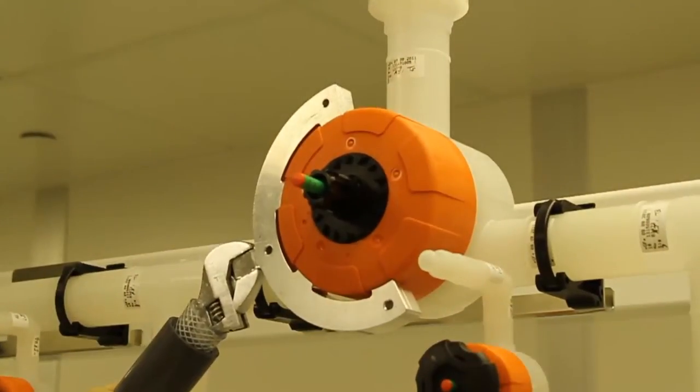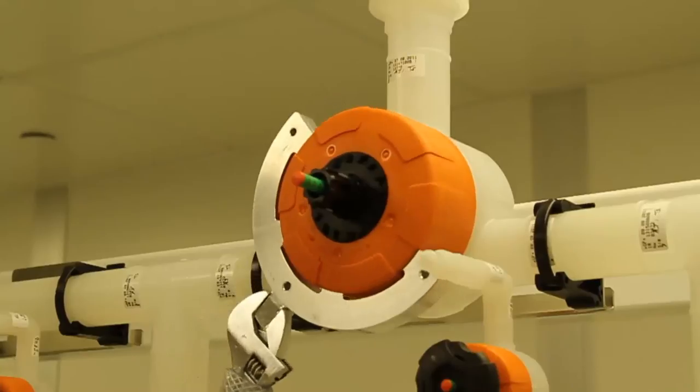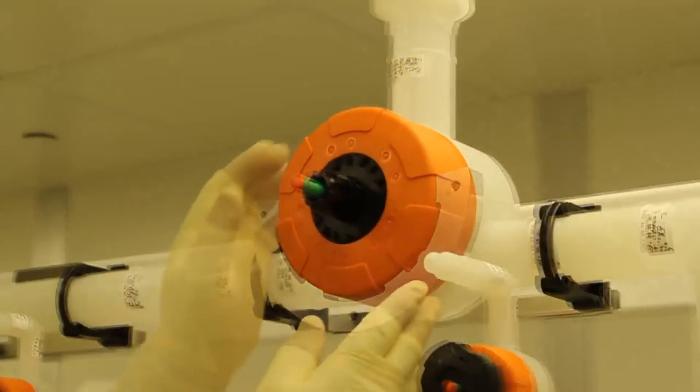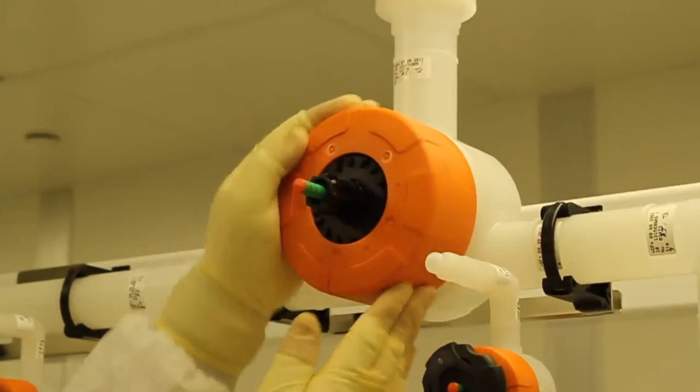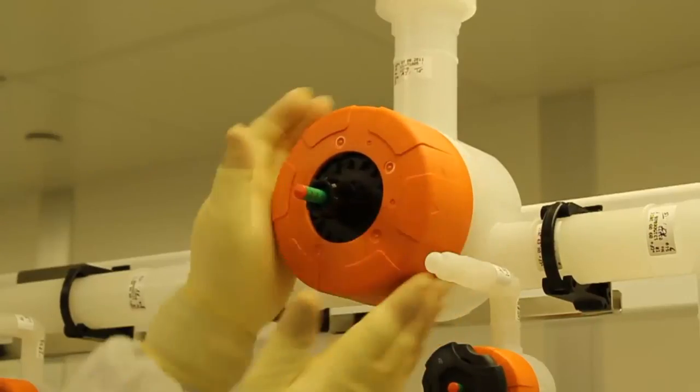Using the strap wrench or valve nut key, turn the housing nut counterclockwise until it becomes loose. Once loose, you can remove the nut by hand and place it aside.